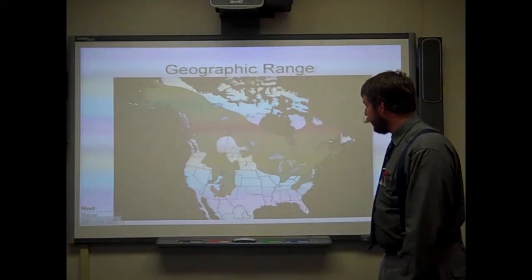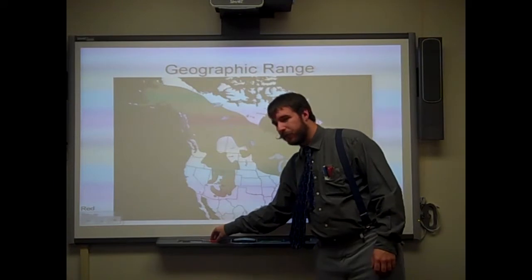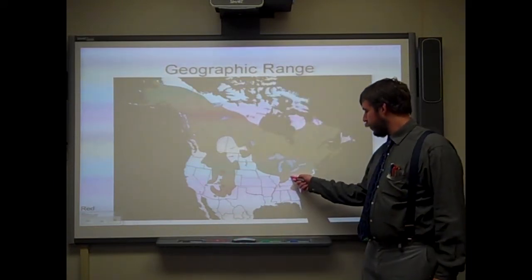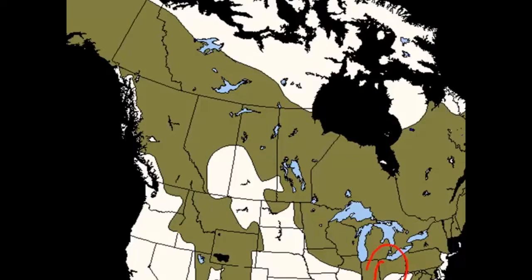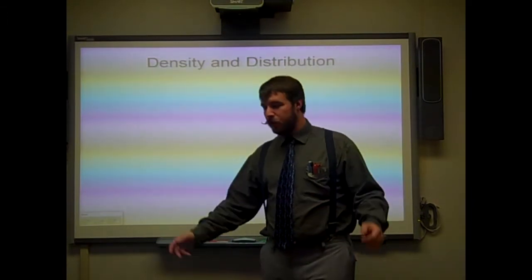Here we have an example — this is the geographic range for the red squirrel. We don't have a whole lot of red squirrels in this part of Ohio, so it goes all the way down to central and a little bit lower Ohio, but for the most part the red squirrel is something you sort of see up in the northern part of Ohio, found throughout the mitten of Michigan. So that's an example of the geographic range.